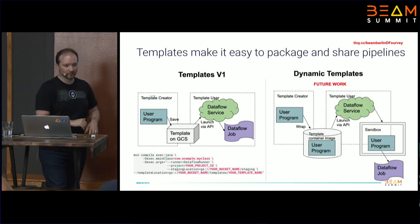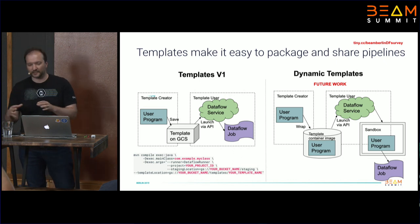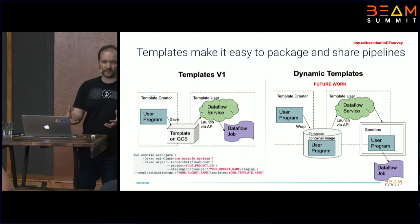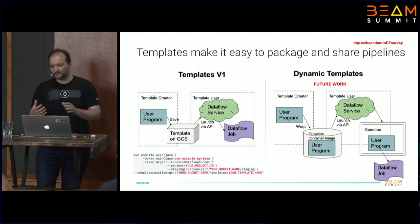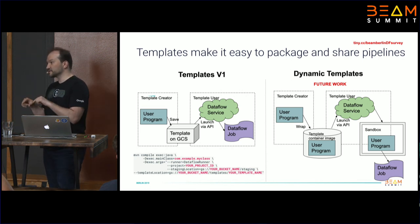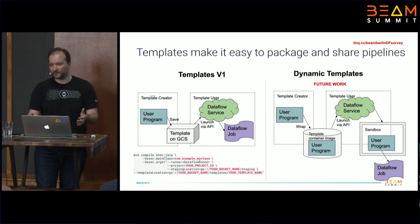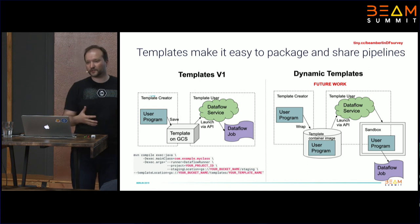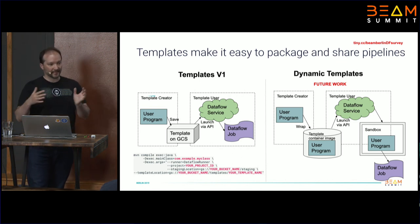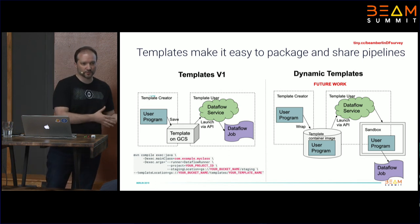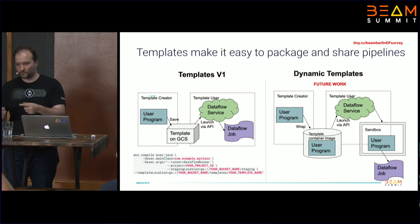We are working on something we call dynamic templates. The 'dynamic' refers to the fact that instead of creating a GCS file with the binary representation of your template, we will create a container image with the user command used to create it. When you instantiate this template, it creates a sandbox, runs your Maven command, and creates a job. This is different because it allows us to convert pretty much any pipeline into a templated job. The current V1 version has limitations on parameter types. The future version will be much more capable.